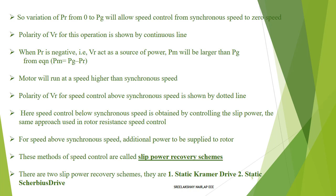When PR is negative, VR acts as a source of power, and PM will be larger than PG. From the equation PM = PG − (−PR), PM will have a higher value, and the motor will run at a speed higher than synchronous speed. The polarity of VR for speed control above synchronous speed is shown by a dotted line in the diagram.